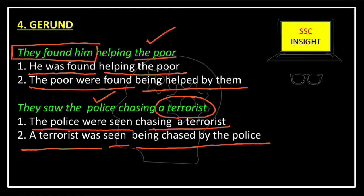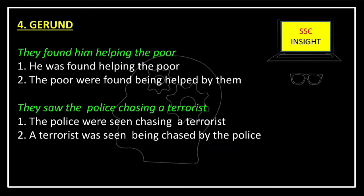We also need to remember that 'police' is a plural noun, so it always goes with a plural verb. In the first case, when considering only the first object, this portion remains unchanged. But when considering the second object, both verbs change: 'saw' becomes 'was seen' and 'chasing' becomes 'being chased.'